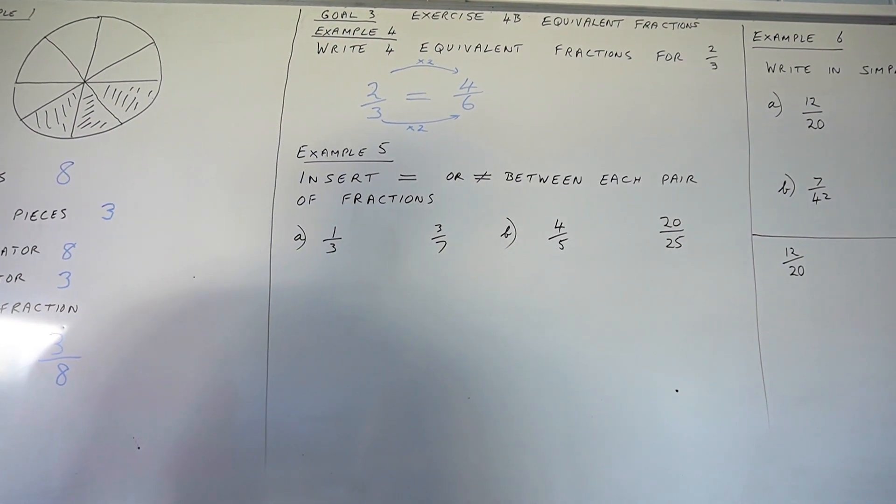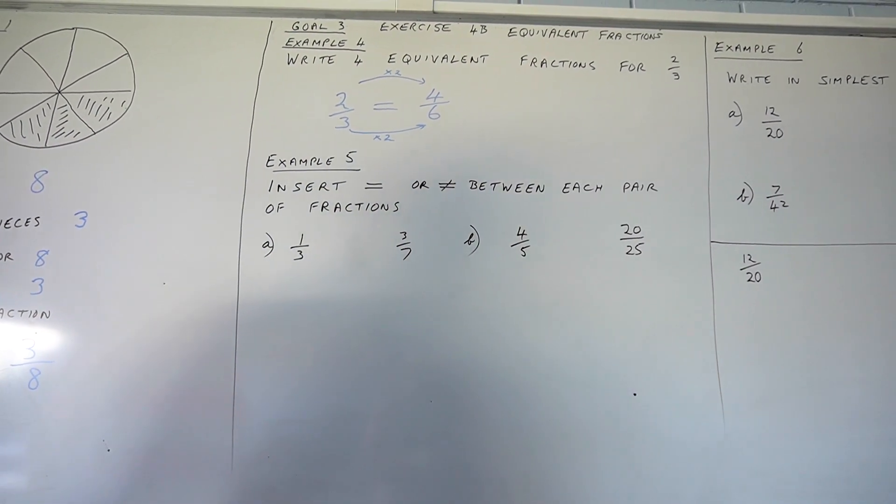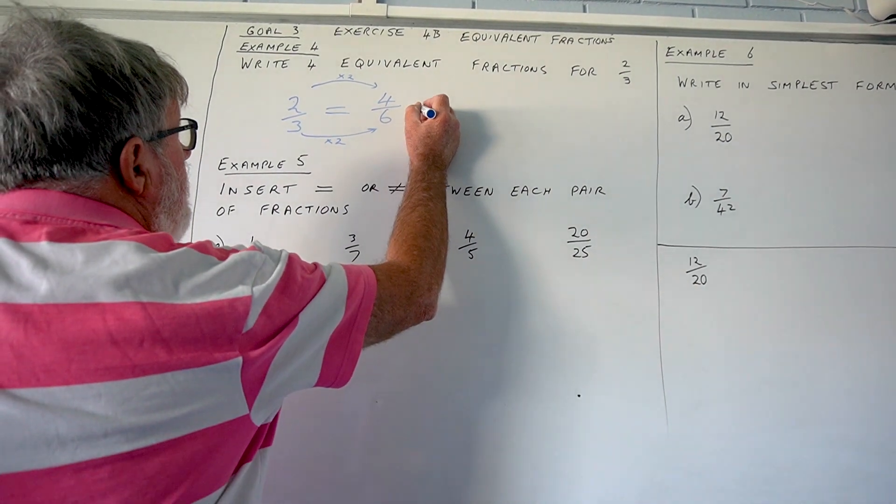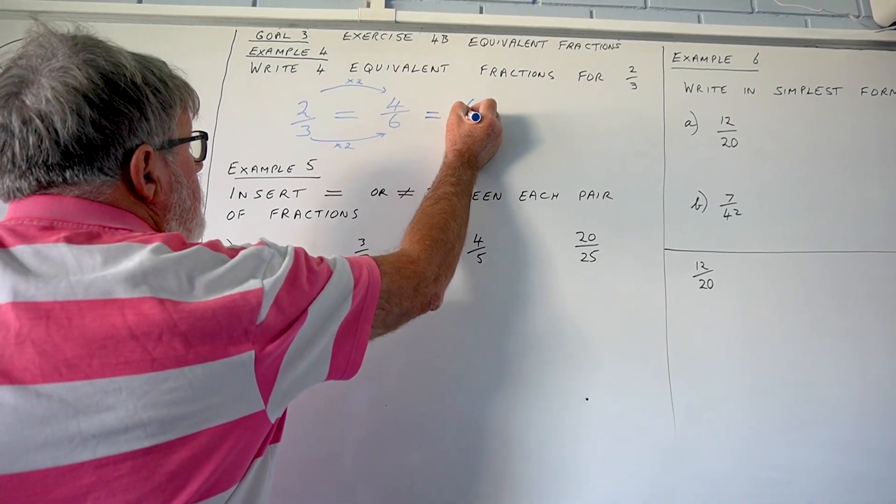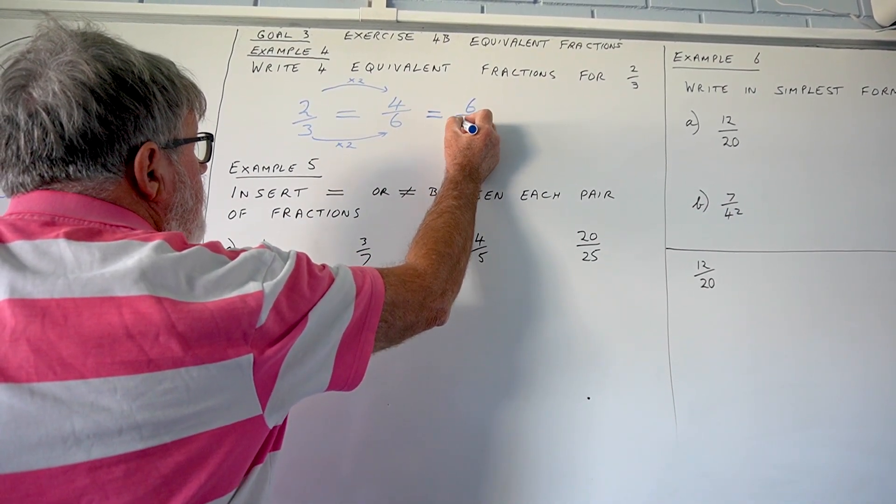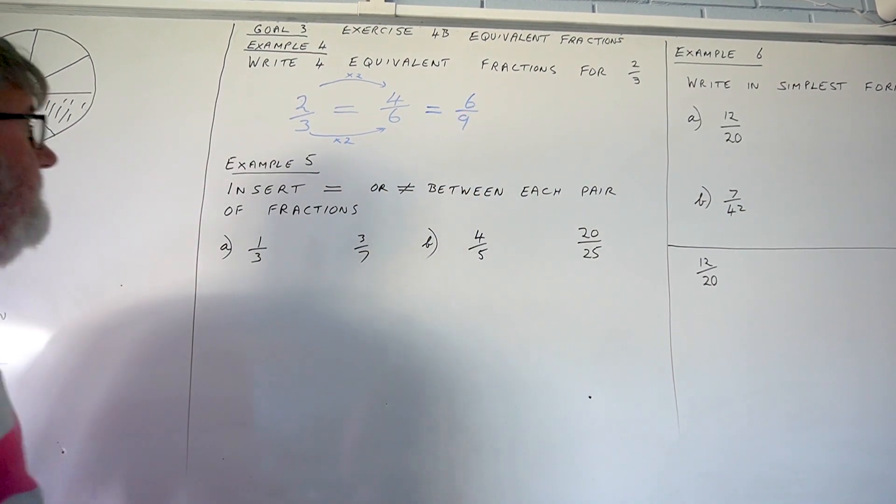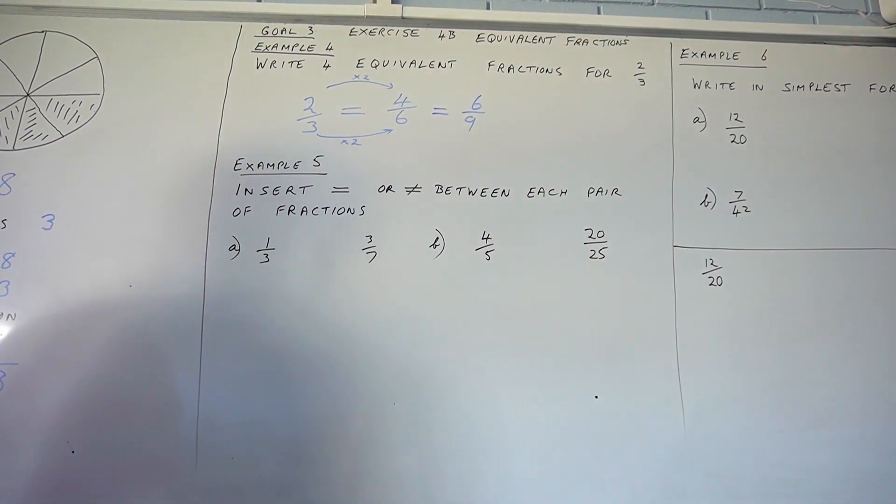We've got to find 4, so let's try another number. Let's try by multiplying by 3. What is 2 times 3? It is 6. What is 3 times 3? It is 9. So, 6 ninths is the same as 2 thirds.